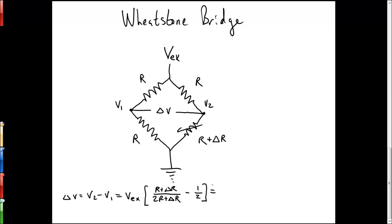After a fair amount of algebra, we can show that this is equal to delta R over 2R times 2R plus delta R, all of that times our excitation voltage. But we said that delta R was small compared to R, and so we can ignore the delta R in the denominator here, and we end up with the change in voltage is equal to the excitation voltage times delta R over 4R.